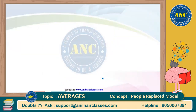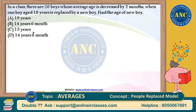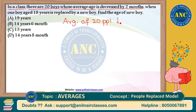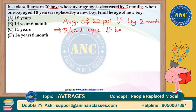Please see the next question — a similar kind of question, a beautiful variety. In a class, there are 20 boys whose average age is decreased by two months. Average of 20 boys decreases by two months means total age will decrease by 2 × 20 = 40 months. 40 months is nothing but 3 years and 4 months. Total age will decrease by 3 years and 4 months.